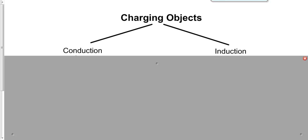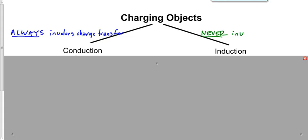There are two general categories of charging: charging by conduction and charging by induction. Charging by conduction always involves a transfer of charge, whereas induction never involves a transfer of charge. When we say charge transfer, we mean electrons. Conduction always involves electrons moving from one thing to another; induction never involves electrons moving from one thing to another.